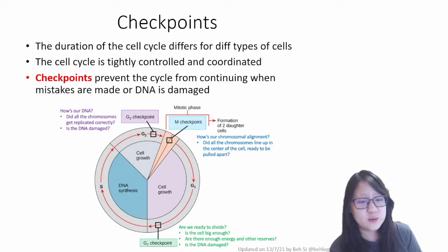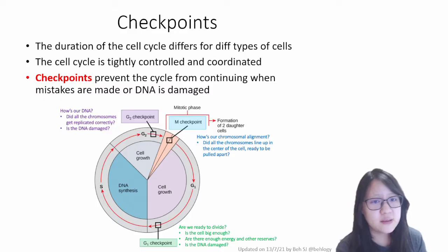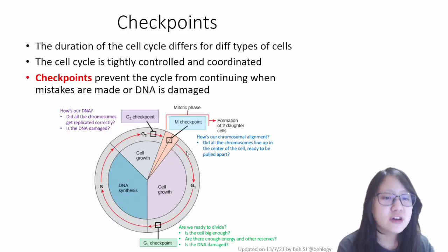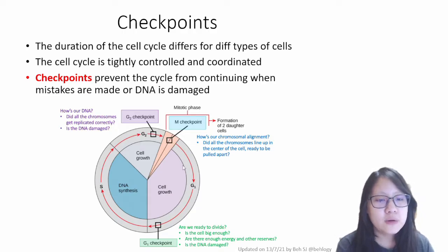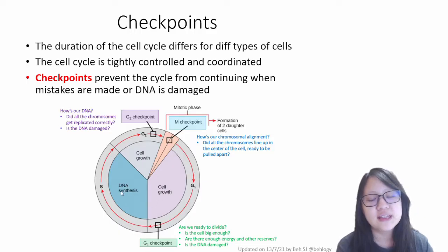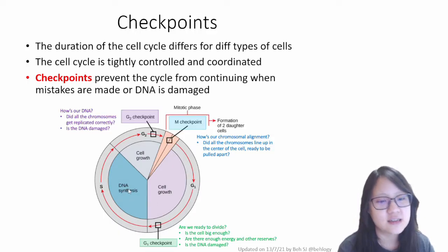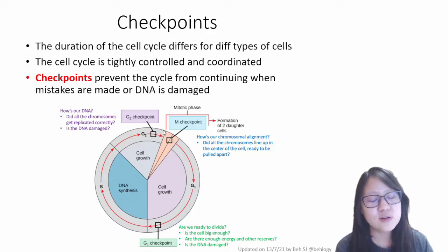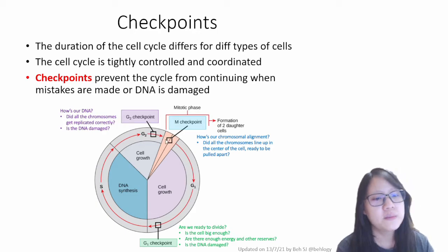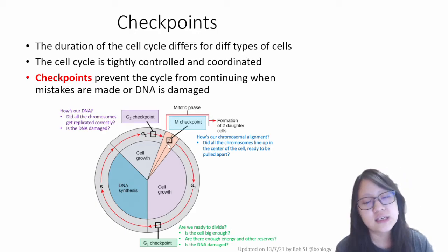Now as we saw in previous lectures, the cell cycle is not made out of just mitosis. Most of the time the cell is in interphase, where cell growth and DNA synthesis occurs. There's only a small section of time where mitosis happens.